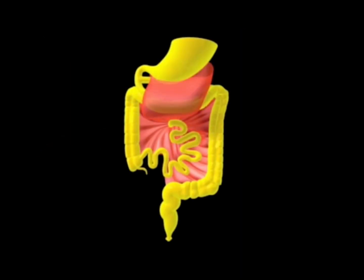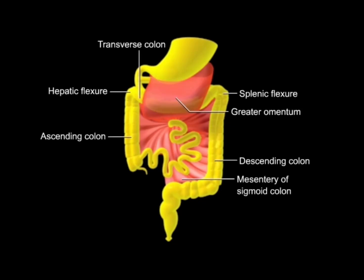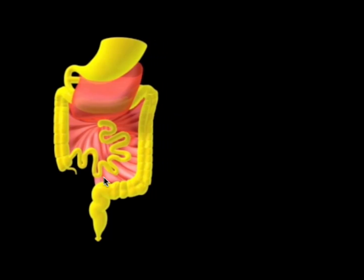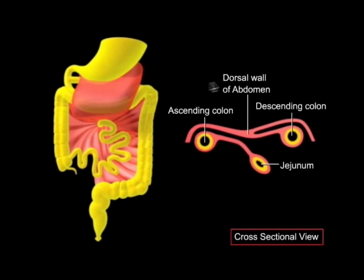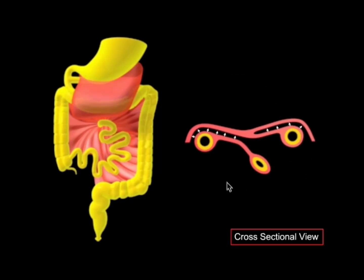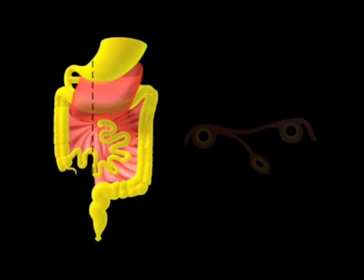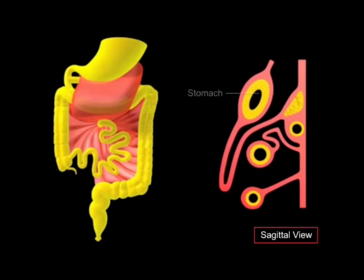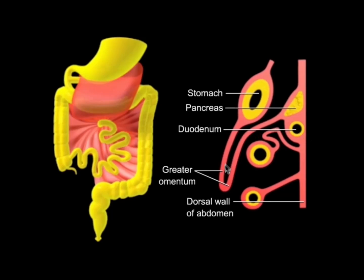Quick intermission on the mesentery. In a ventral view, we see the hepatic and splenic flexures of the colon abutting the liver and spleen respectively, the mesentery of the sigmoid colon, and the greater omentum hanging from the greater curvature of the stomach. A cross-sectional view shows the peritoneum, ascending and descending colon, and how they're fixated to the body wall. A sagittal section shows the stomach, duodenum, and pancreas with their peritoneal attachments, as well as the greater omentum and transverse colon.